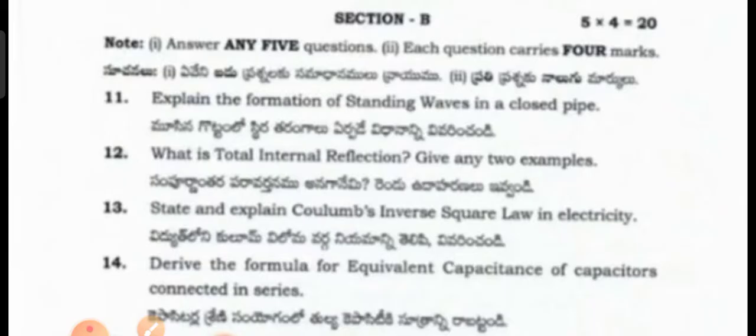Physics Section B questions include: Explain the formation of standing waves in a closed pipe. What is total internal reflection? Give any two examples. State and explain Coulomb's inverse square law in electricity. Derive the formula for equivalent capacitance of capacitors connected in series.